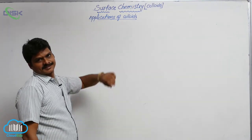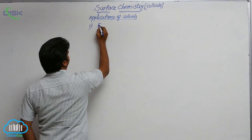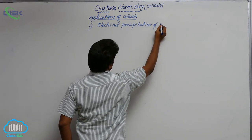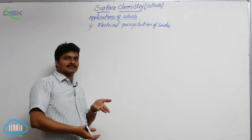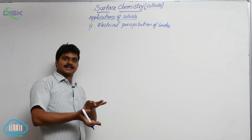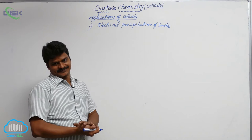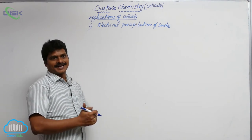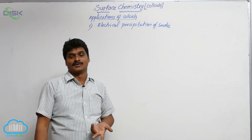The last topic in colloids is its applications. The first application is electrical precipitation of smoke. When smoke comes out of a chimney in an industry, it is passed into a chamber where an electrode with opposite charge is present. When the smoke comes into contact with that electrode, the particles get coagulated. In smoke, there are arsenous compounds, carbon particles, and some other particles.